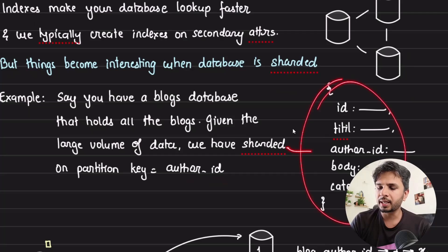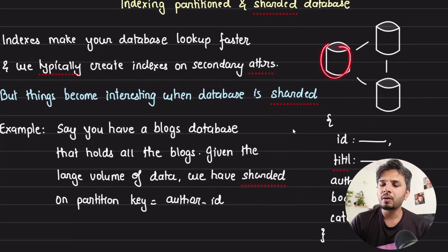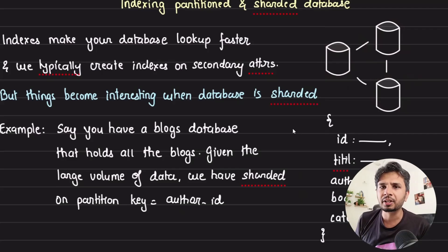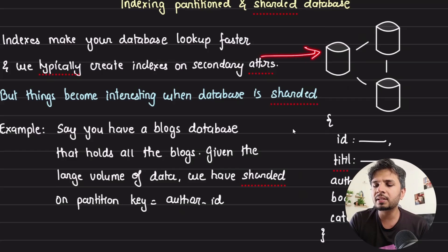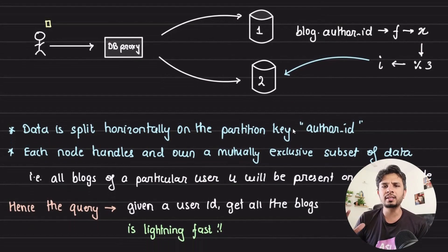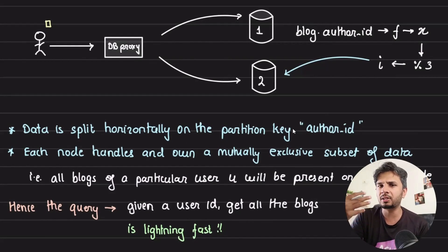Given a blog object and an author_id, we determine which of the nodes is most capable of handling it using a hash function. We take the author_id, pass it through the hash function, find which database node that key resides in, and place the data there. This is the classic way to handle hash-based partitioning — you can also go for range-based or consistent hashing depending on your preferred implementation.